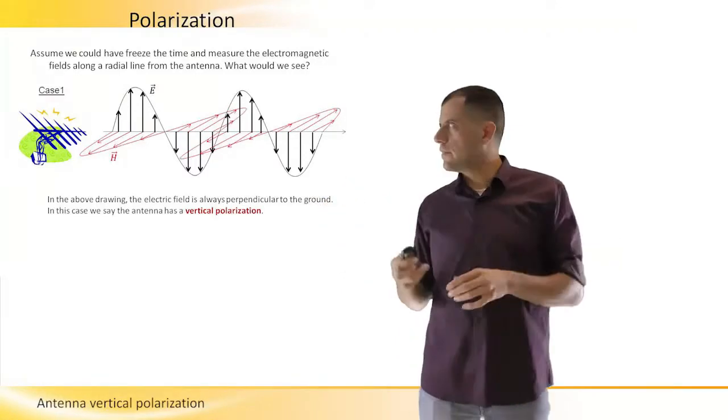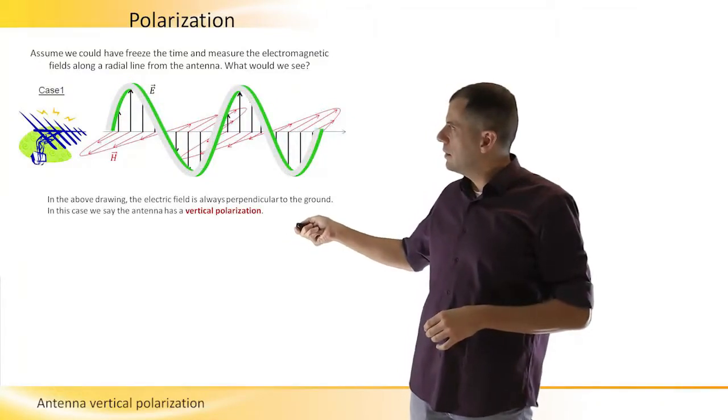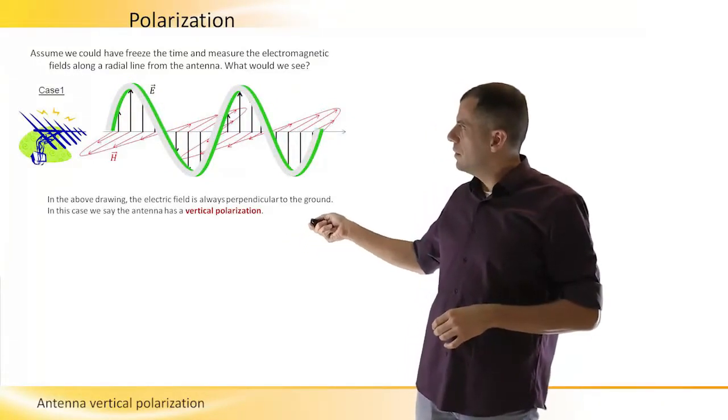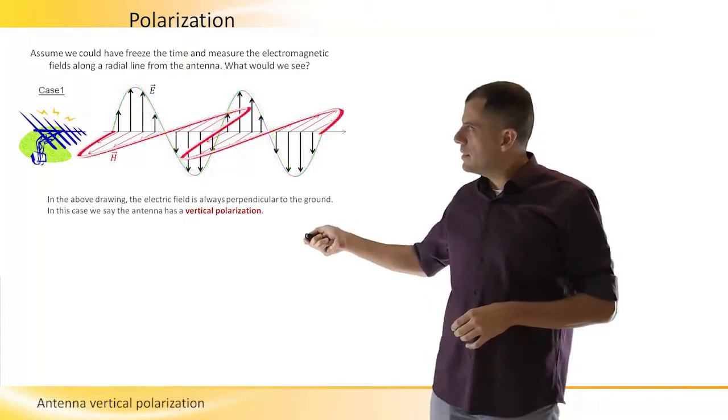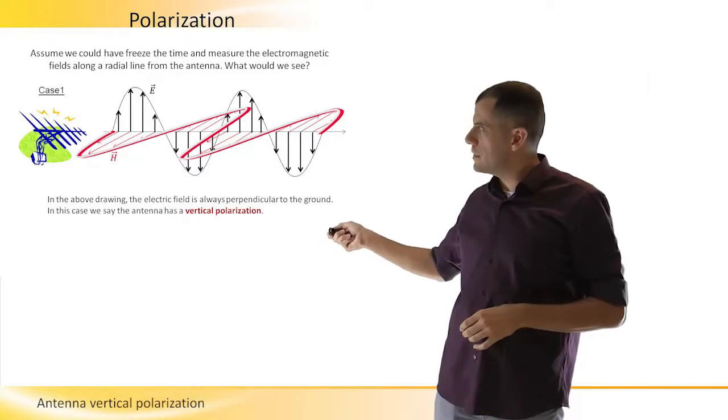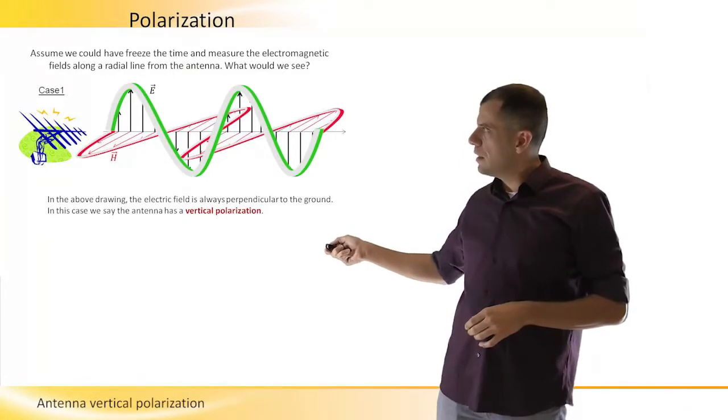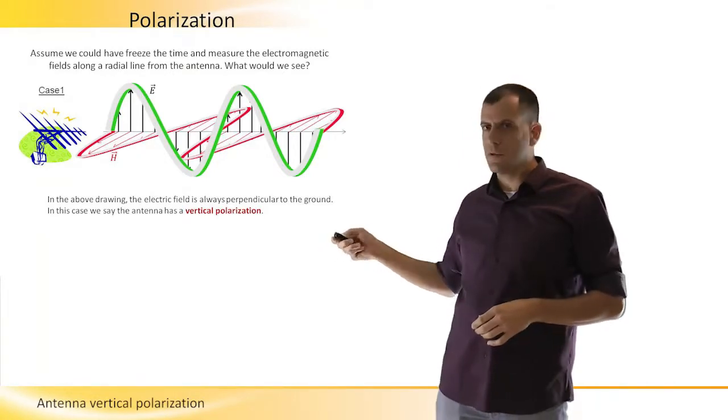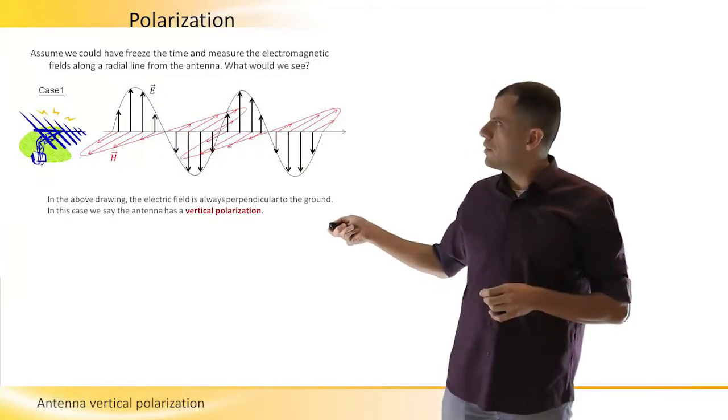We will see a wave, and we will see the electric field in a shape of a sine wave, and the magnetic field will be also in a shape of a sine wave. As you can see, the magnetic and the electric field are perpendicular. Of course, we are assuming we are far enough from the antenna. This is very important.